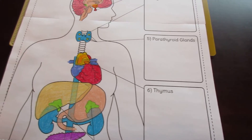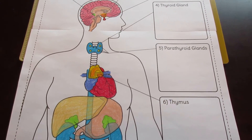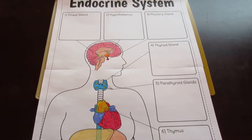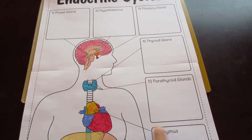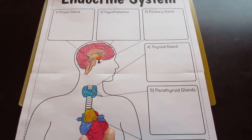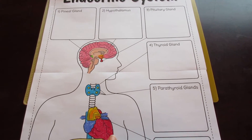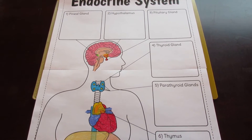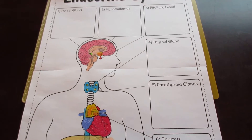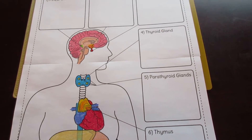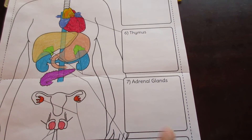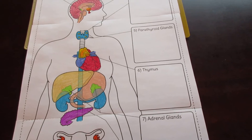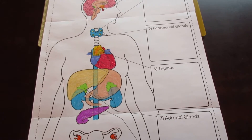Another one of the options I provide looks very similar to this, but the labels are replaced by blanks. This is for more advanced students, for whom you might want to ask questions like, does anybody know what structure number seven is? This allows for more participation.